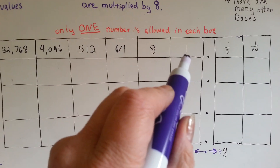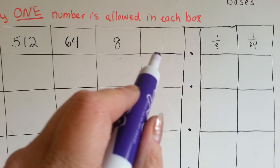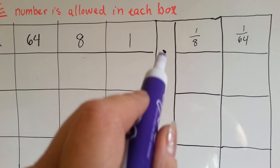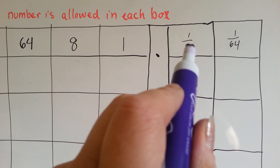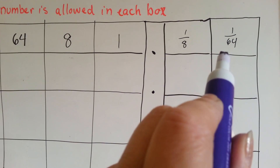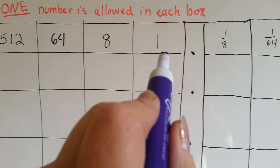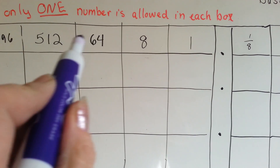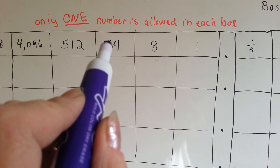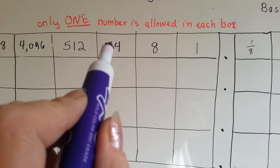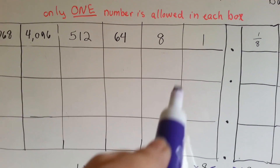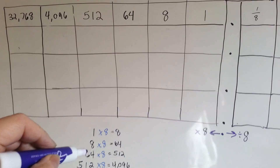In our very first box to the left of a decimal point we'd have ones, but on the very right of it we'd have eighths. To the right of that we'd have sixty-fourths. Now going this way, instead of ten we'd have eight, instead of a hundred we'd have sixty-four, instead of a thousand we'd have five hundred and twelve, because we're multiplying by eight.